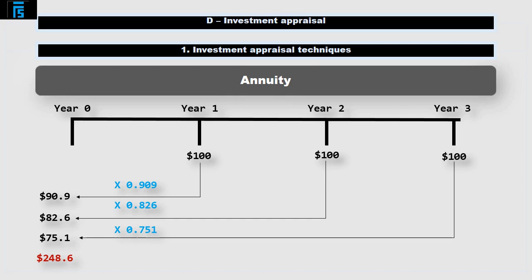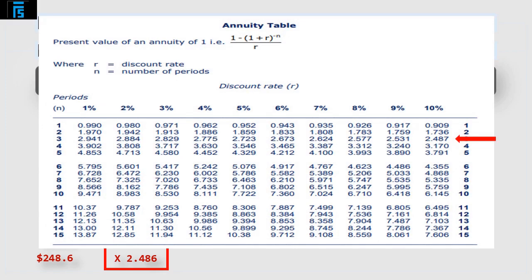A quicker way to do this would be to use an annuity factor. An annuity factor is simply the sum of the individual discount factors. In this case, the 10% three year annuity factor is 0.909 plus 0.826 plus 0.751, equals 2.486. So an alternative calculation would be $100 times 2.486, equals $248.60. Better still, annuity factors are available in tables too, and these are provided in the exam. Because discount factors are rounded to three decimal places, when we added the three together it created a small rounding error — this is the only reason why the table showed 2.487 and we had calculated 2.486. Either would be acceptable in the exam.